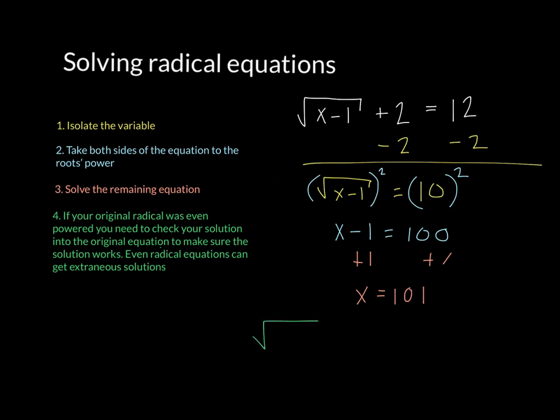So my original equation was 101 minus 1 plus 2 equals 12. So the square root of 100 is 10 plus 2 is 12. So it checks out. So that means that my actual solution then is for sure x equals 101.